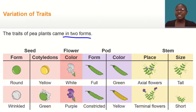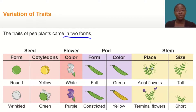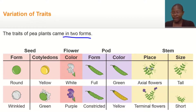Unlike characteristics displayed by other organisms, a trait is a variant for a genetic characteristic. For example, the characteristic seed form or shape has two traits: round or wrinkled.